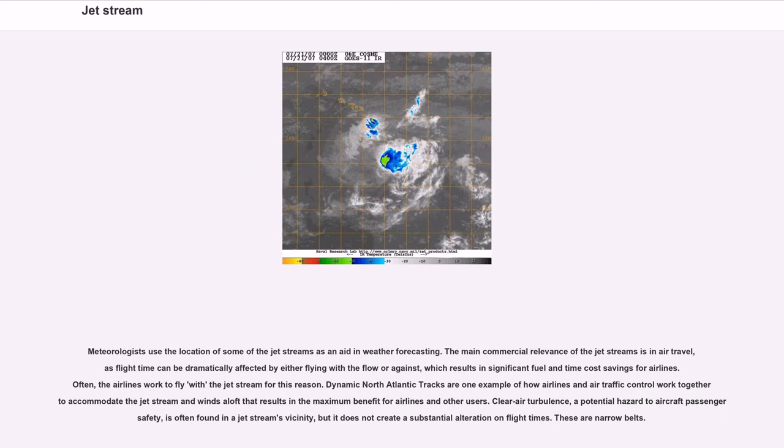Meteorologists use the location of some of the jet streams as an aid in weather forecasting. The main commercial relevance of the jet streams is in air travel, as flight time can be dramatically affected by either flying with the flow or against, which results in significant fuel and time cost savings for airlines. Clear air turbulence, a potential hazard to aircraft passenger safety, is often found in a jet stream's vicinity, but it does not create a substantial alteration on flight times.